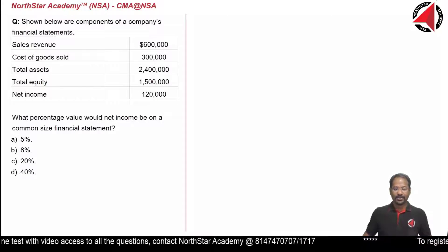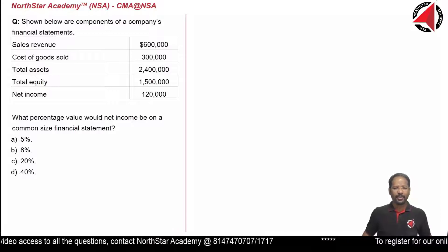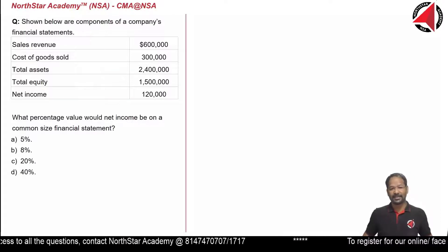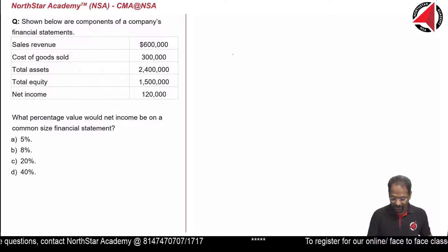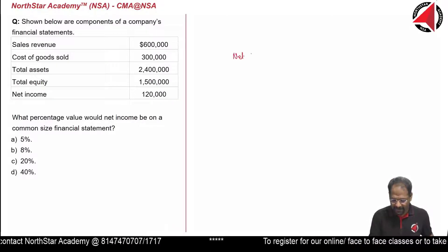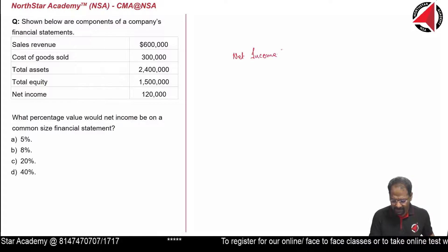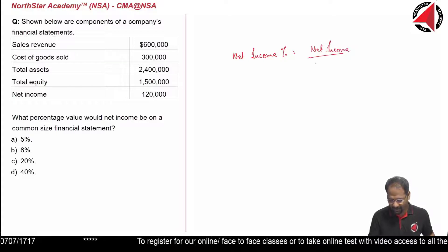To find out the percentage value, remember in vertical analysis, sales revenue is always 100%. So the formula to convert net income into a percentage would be: net income divided by sales.